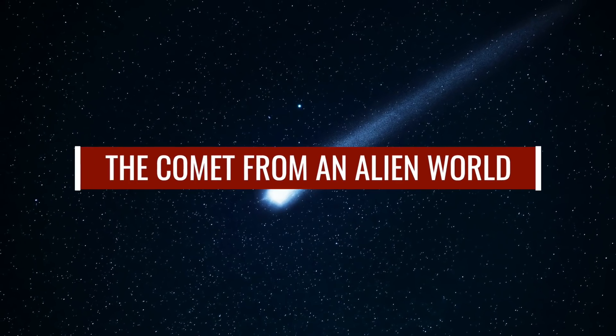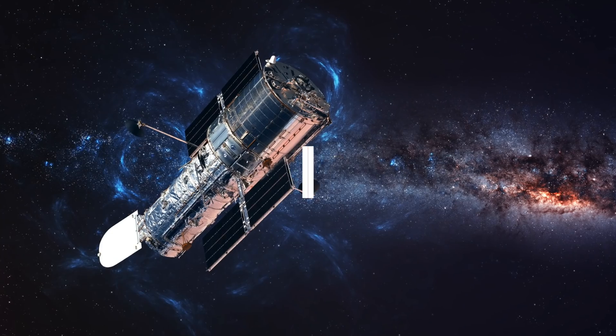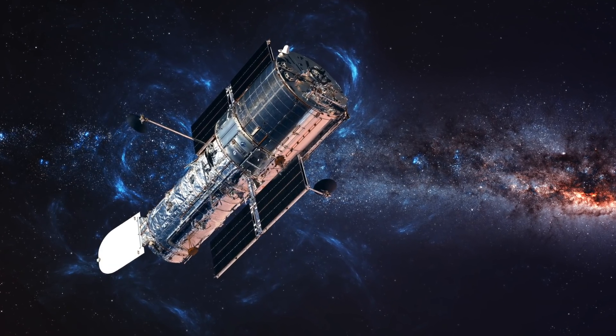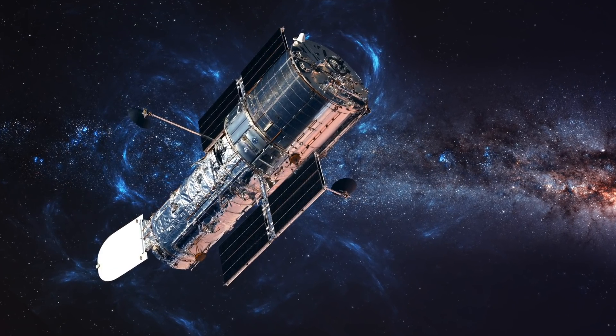The comet from an alien world. The celestial body in question, which could be studied in detail with the help of NASA's Hubble Space Telescope, is a comet that scientists have named 2I Borisov.